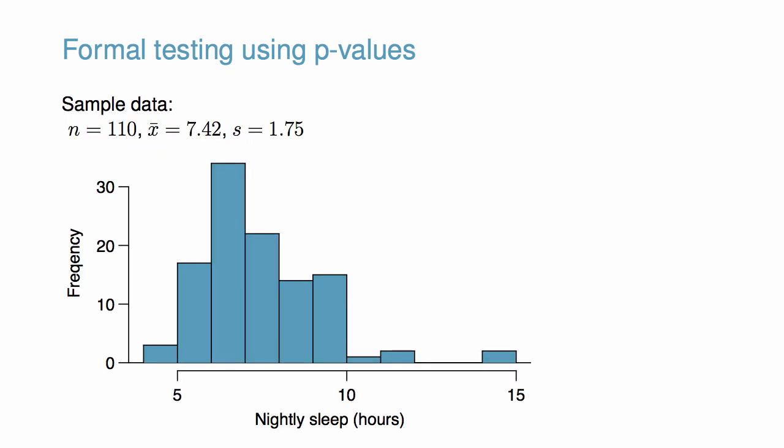The researchers conducted a simple random sample of 110 students and found that these students average 7.42 hours of sleep with a standard deviation of 1.75 hours. To proceed with hypothesis testing, we first need to evaluate if the normal model is valid for the sample mean.